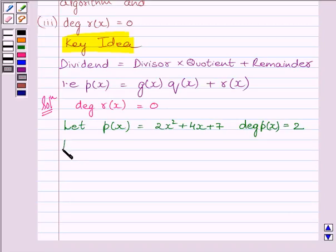Let us assume Gx equal to 2x. Here, the degree of Gx is equal to 1.